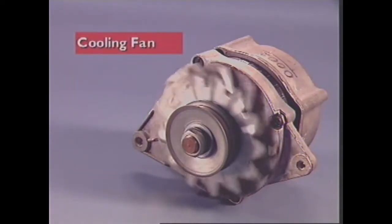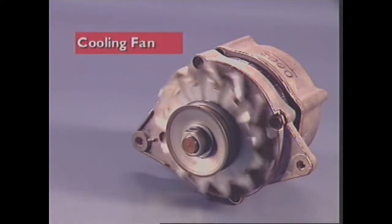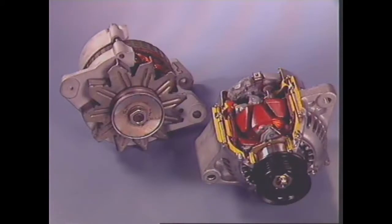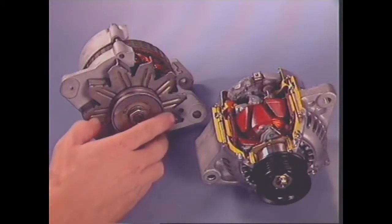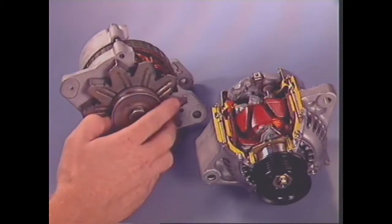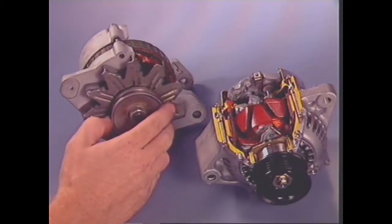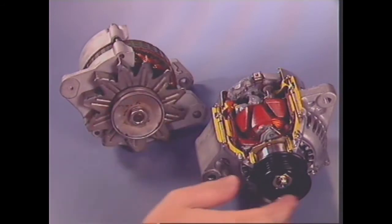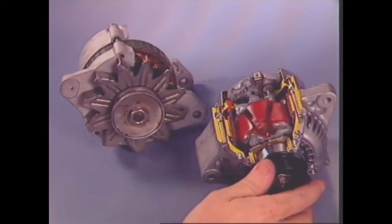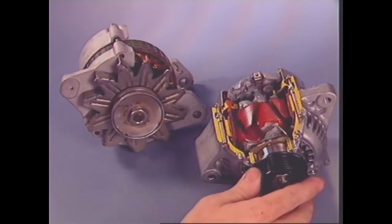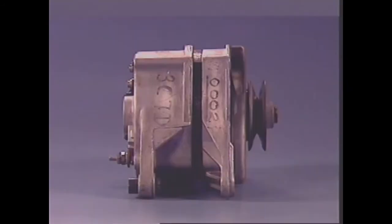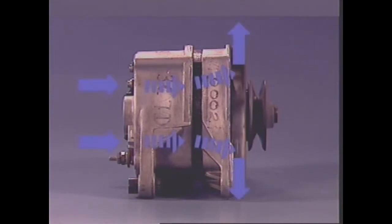This section examines the alternator's cooling fan. This fan is a powerful centrifugal type. It is mounted on the rotor shaft and may be an integral part of the drive pulley or part of the rotor. It is essential to maintain a cooling stream of air over the diodes and stator.